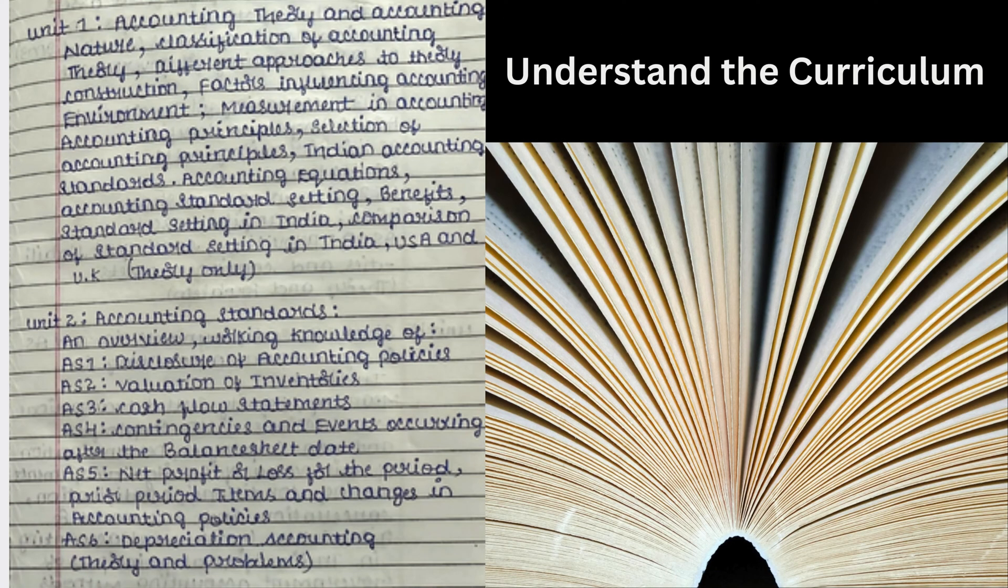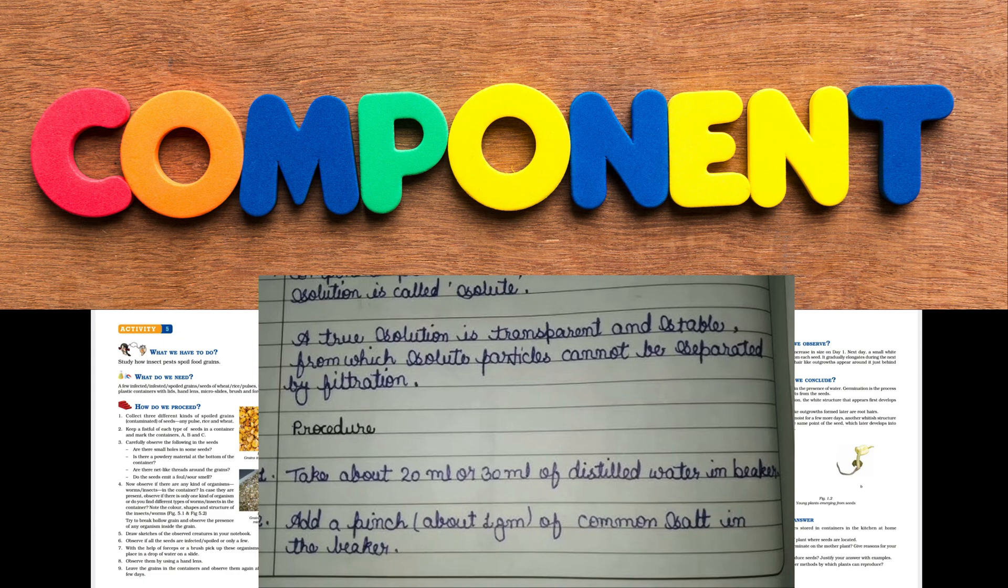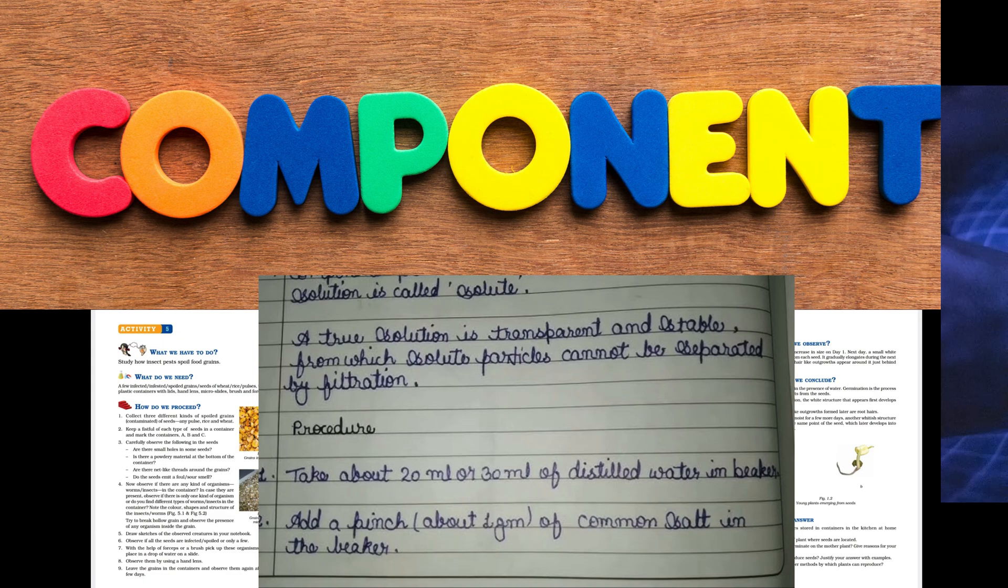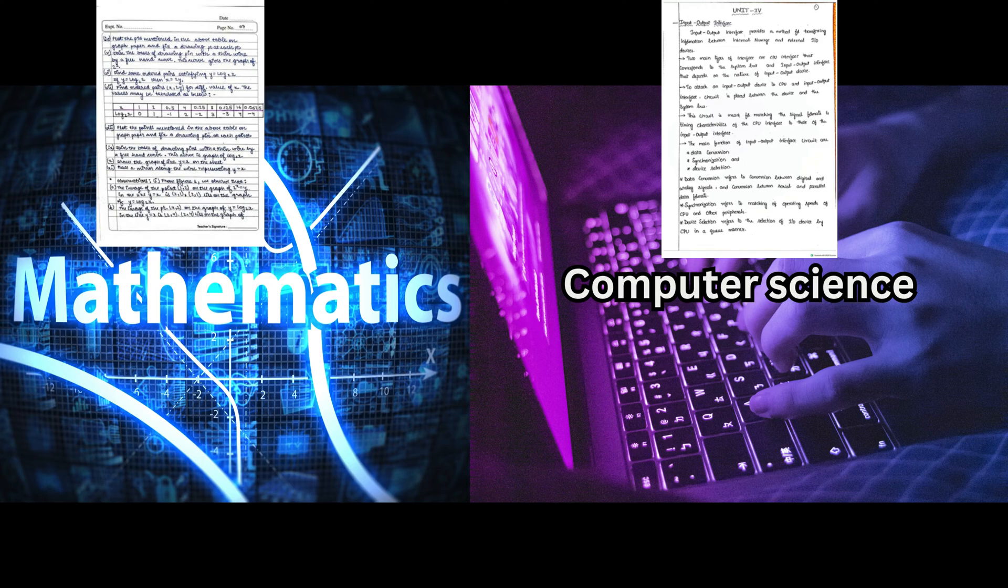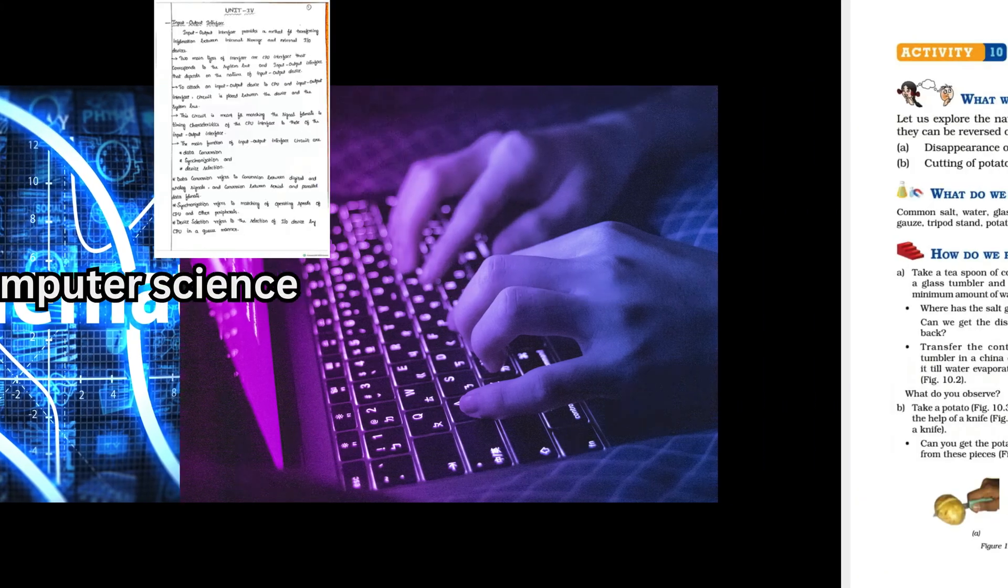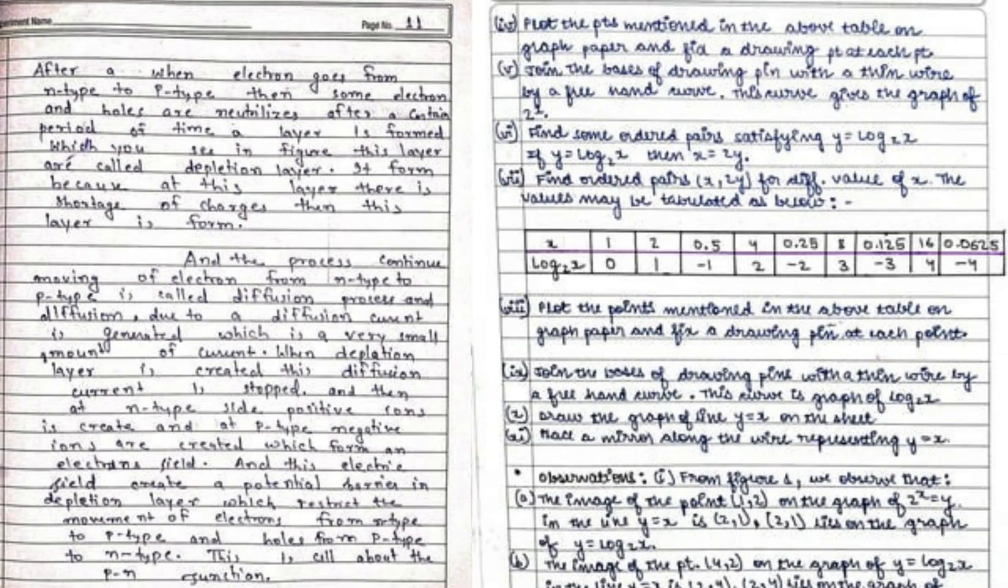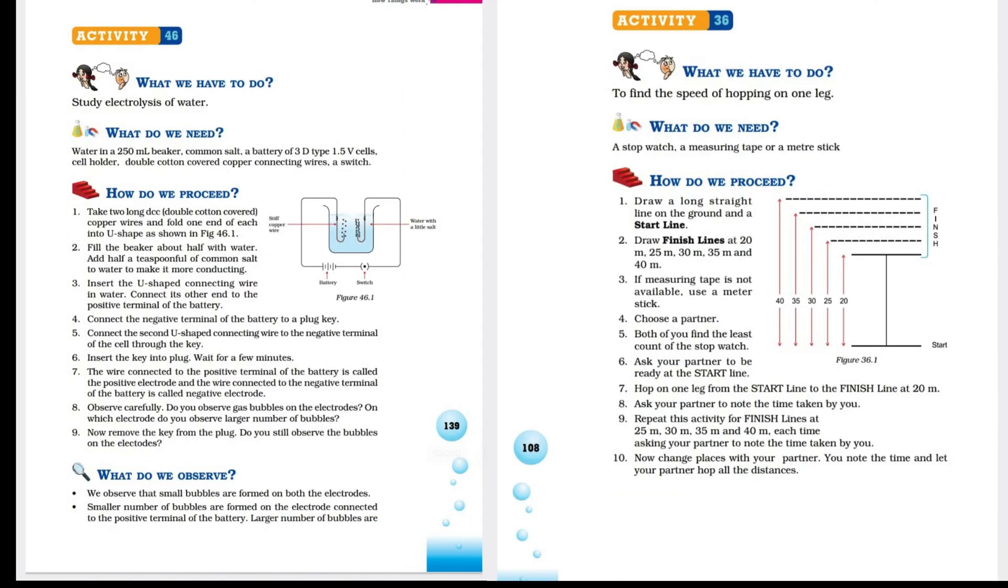Understand the curriculum. Review the syllabus for each class to understand the practical components of science or other subjects like mathematics or computer science. Ensure that the experiments align with the learning objectives of each grade, covering topics from basics to more advanced concepts.